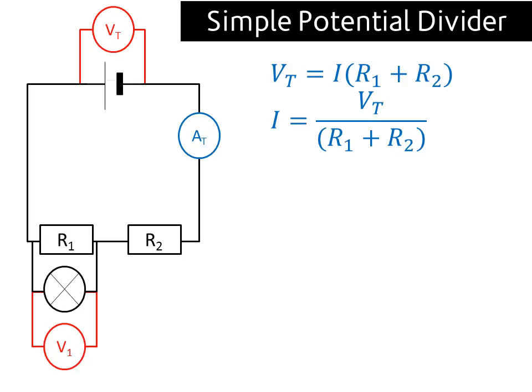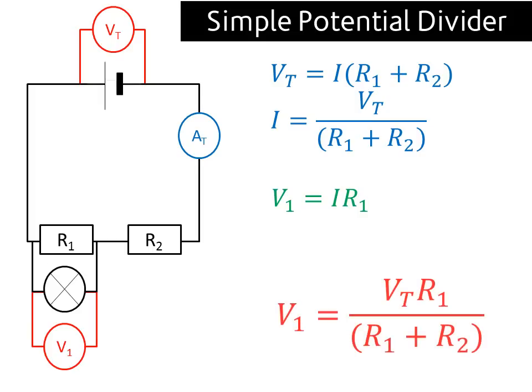If we rearrange that, we get I equals VT over (R1 plus R2), so we know what I is. We also know for the resistor R1 that the voltage across it equals the current going through it, which is found the same as AT, times by the resistance R1. And if we substitute those two formulas in, we end up with this rather good looking formula.